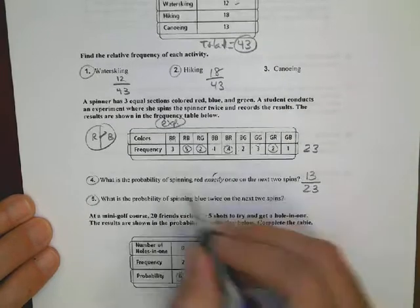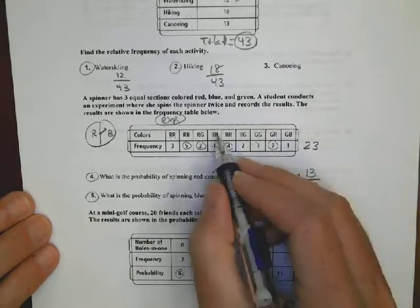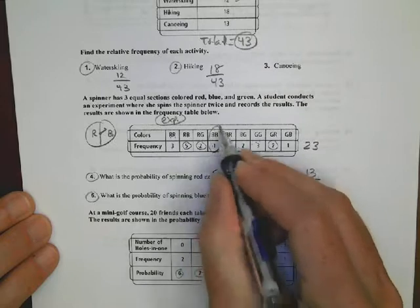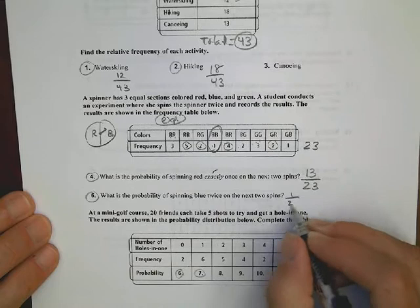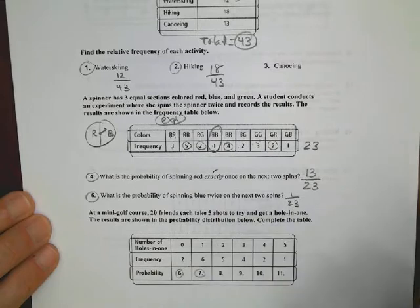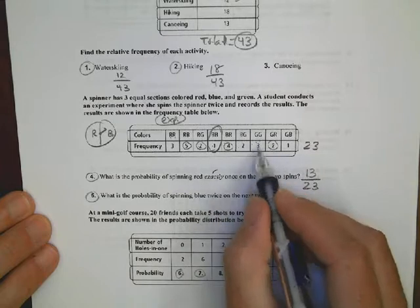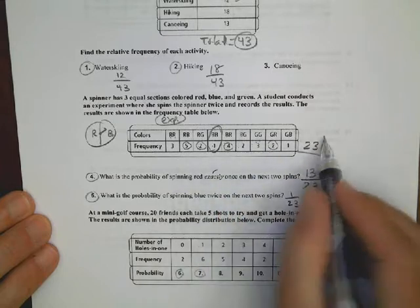Now, my probability is spinning a blue twice. Well, where's my blue twice? That's a blue-blue right here. Here's my blue twice, BB. It only happens one time, so 1 out of 23 for that answer. That makes sense? So you have to look at the chart to figure out how many times did it occur, but make sure you start with your total.